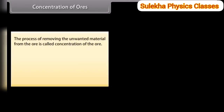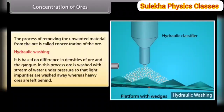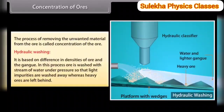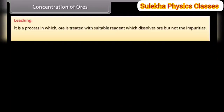Concentration of ores. The process of removing the unwanted material from the ore is called concentration of the ore. Important methods include: hydraulic washing, which is based on differences in densities of ore and gangue — ore is washed with a stream of water under pressure so that light impurities are washed away while heavy ores are left behind. Leaching is a process in which ore is treated with a suitable reagent which dissolves the ore but not the impurities.